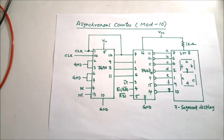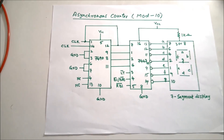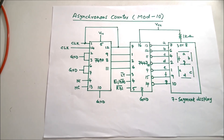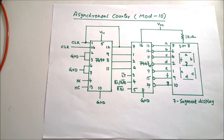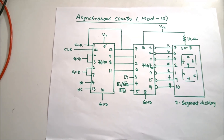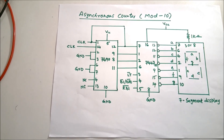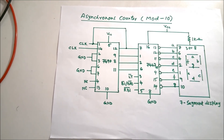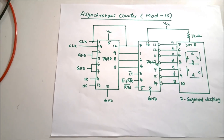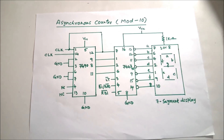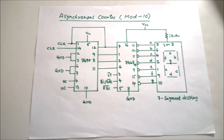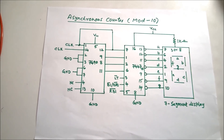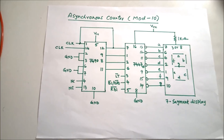The 7490 produces a binary output from pins 11, 8, 9, and 12. This output goes as input to the 7447, which lights up the appropriate LEDs in the 7-segment display to show the corresponding number. That is the overall concept of this experiment.